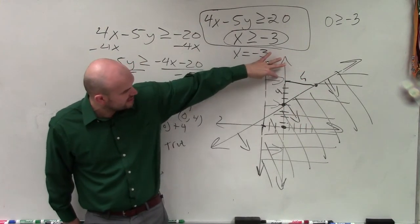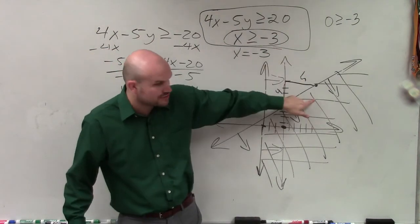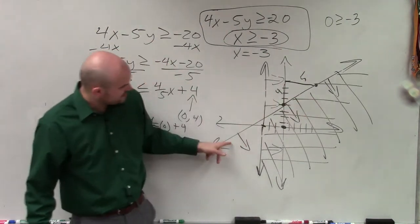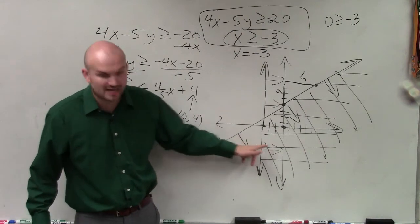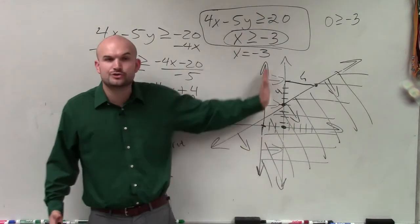See, this region is true for this equation or inequality, but it's not true for that inequality. This is true for this inequality, but it's not true for that. So you're only going to shade where it's true for both of them. Okay? That's the only new tip.